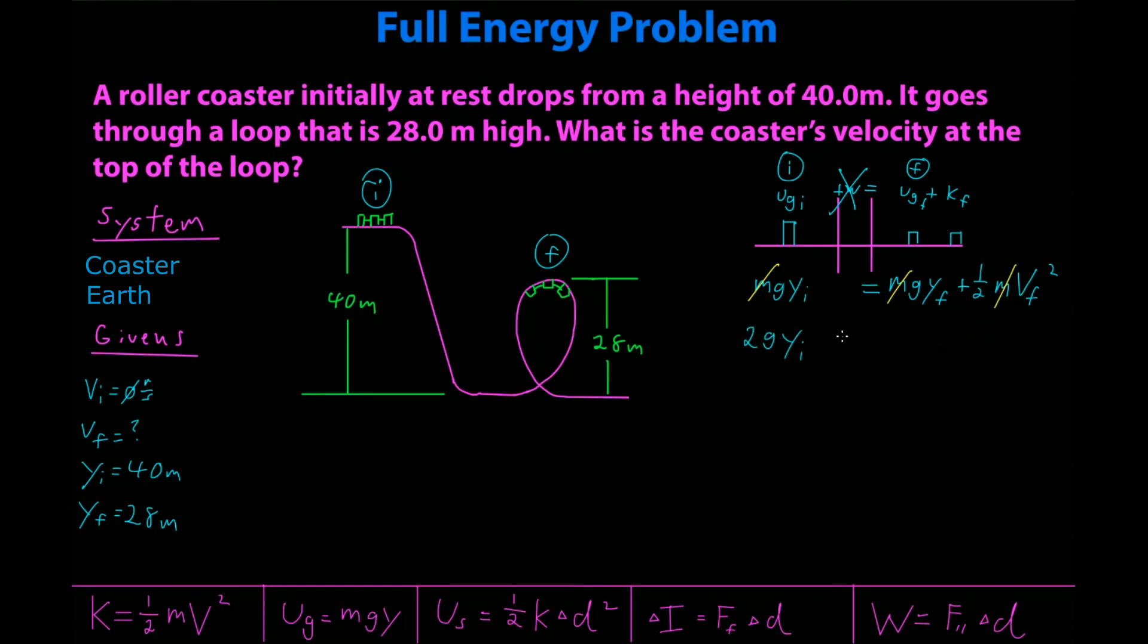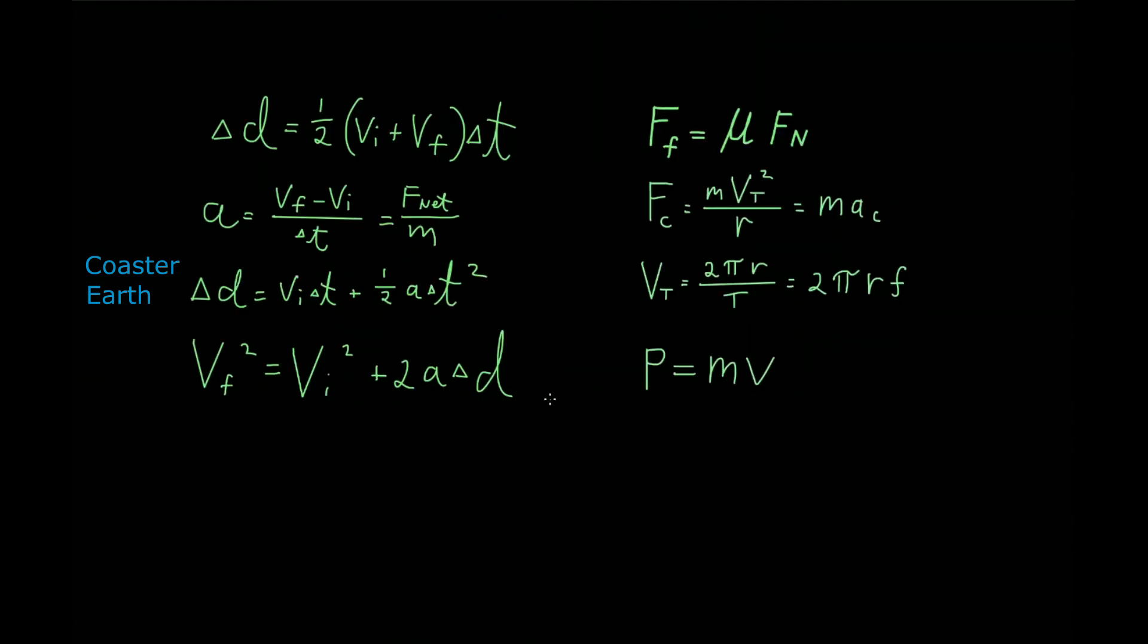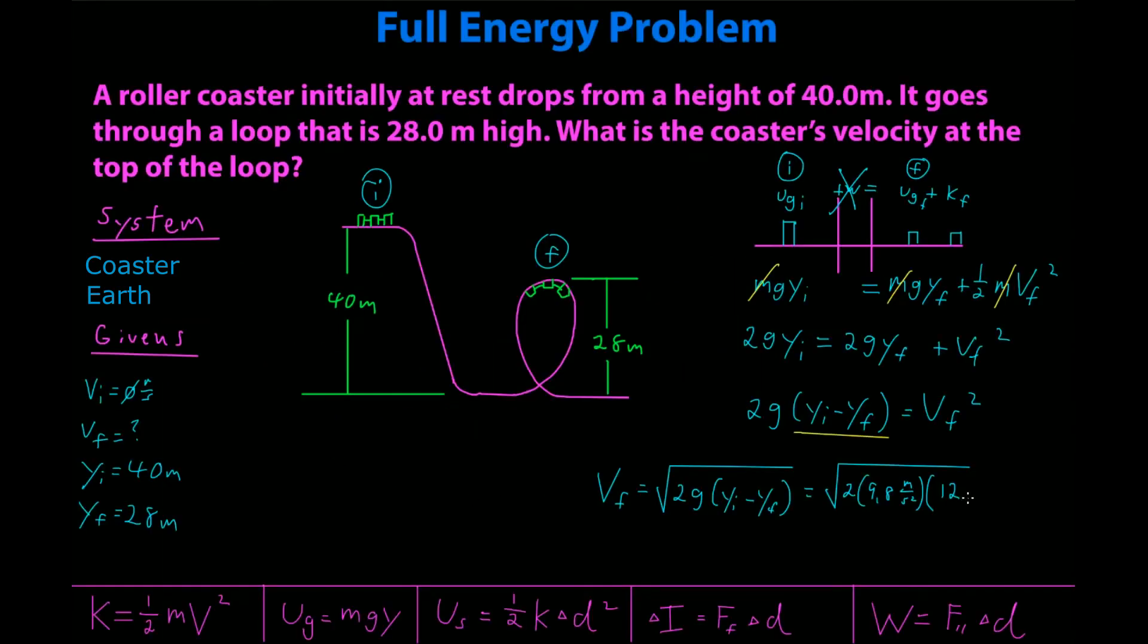I do that and I get 2gy initial equals 2gy final plus vf squared. I'm going to subtract this over and factor out the 2g. If I do that, I get 2g times height initial minus height final equals vf squared. So something I want you to notice. This is basically the change in height, and I can do this because gravitational potential energy is a linear relationship. So vf equals square root 2g times y initial minus y final. A little side note while I'm here, the fact that what I just found is a direct comparison to the fourth kinematic equation, if vi is zero, is not an accident. So I get 2 times 20 meters per second squared times 12 meters. It gives me 15.3 meters per second.